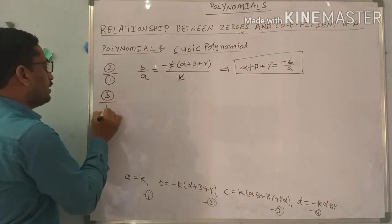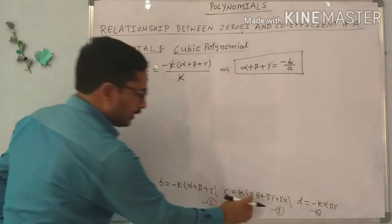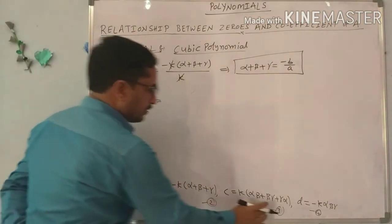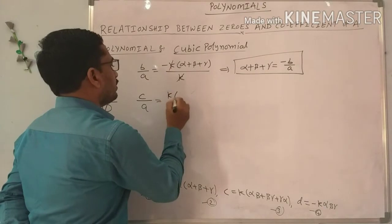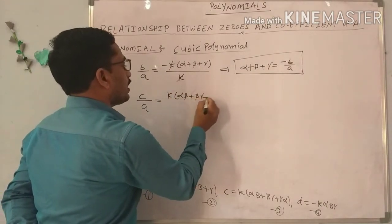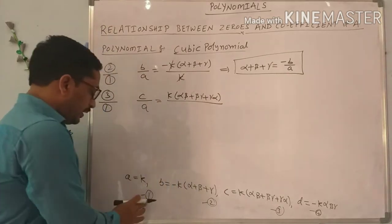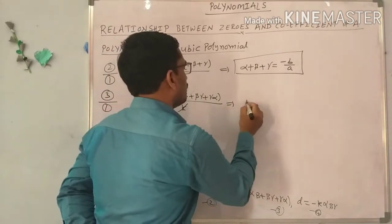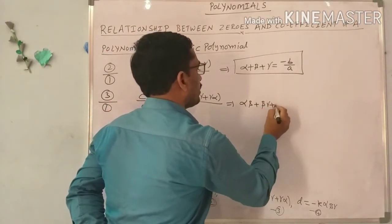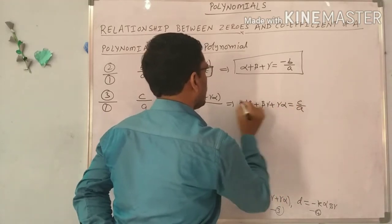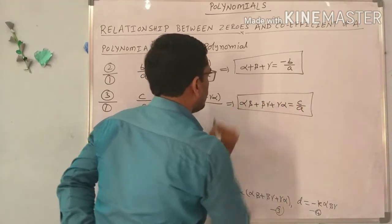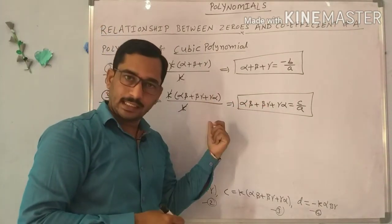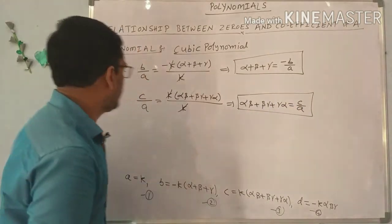Next, do equation 3 by equation 1: C by A equals K into alpha beta plus beta gamma plus gamma alpha divided by K. K cancels. So alpha beta plus beta gamma plus gamma alpha equals C by A. This is the sum of products of zeros taken two at a time, equal to C by A.